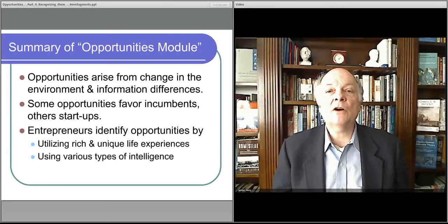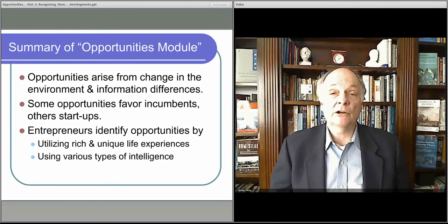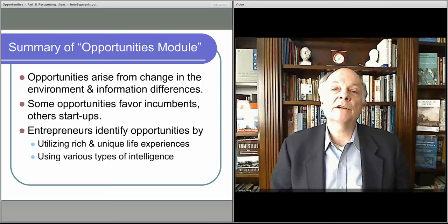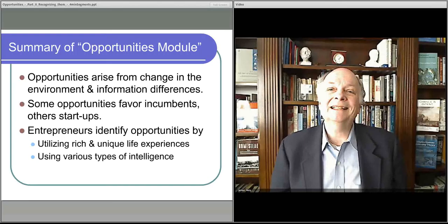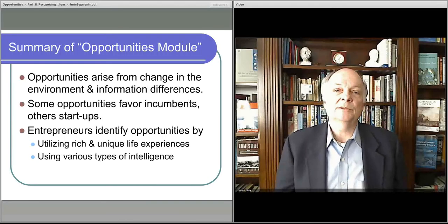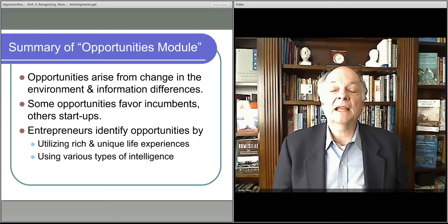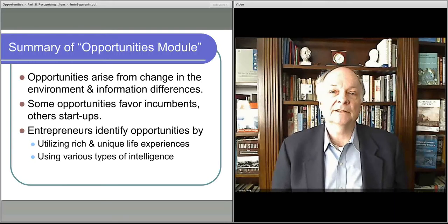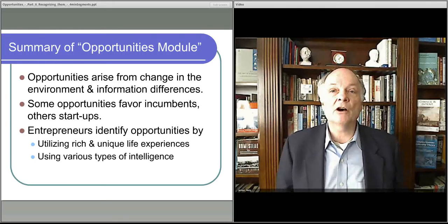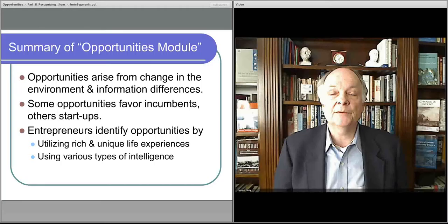So they can bring all of their assets, we call complementary assets, all of their reputation into play. They only have to charge, they only have to make a little bit more money on the new product. In fact, they can almost lose money on that as long as they're making money elsewhere to make sure you don't get into their space. So they have all of these capabilities to compete with you.